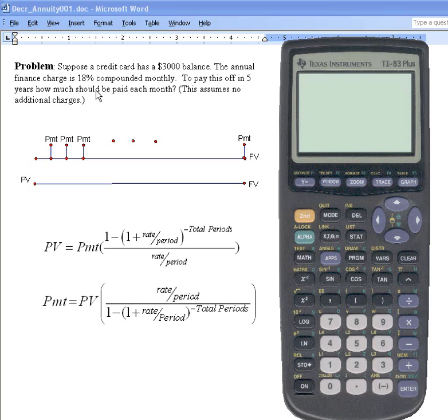The problem is that you're given a credit card with a $3,000 balance. There's an 18% annual finance charge, but it's compounded monthly. And we want to know the payments to pay this off in five years, assuming we don't add any more to the credit card.